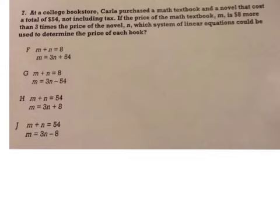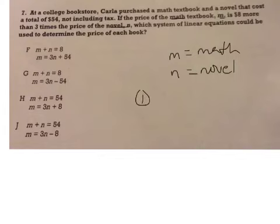When you get to the multiple choice ones you can still identify your variables and work them out the same way, but they end up being a lot easier because you have something to look at. At a bookstore Carla purchased a math textbook and a novel that cost a total of $54. They've identified the variable for you: M is math. Equation one: she purchased a math book and a novel, and she spent $54. When I get my first equation I like to go and mark off any of them that don't line up, that don't match up already. This one doesn't, and this one doesn't. That makes me a much better guesser.